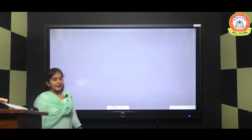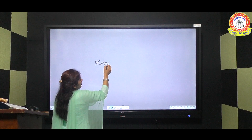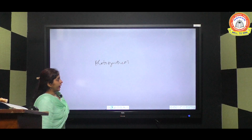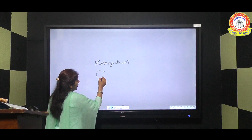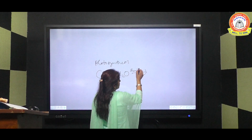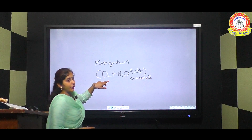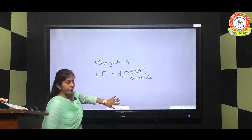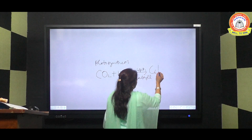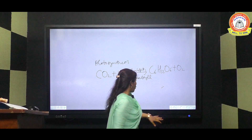Good morning students. In the previous lecture we discussed photosynthesis — the process by which green plants prepare their food. The chemical equation of photosynthesis: carbon dioxide and water react in presence of sunlight and chlorophyll to form glucose (C6H12O6), and oxygen is also released, which is used for breathing.